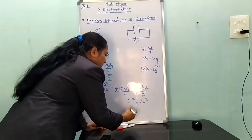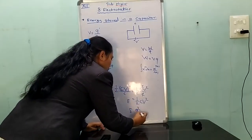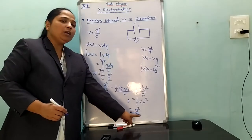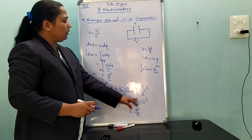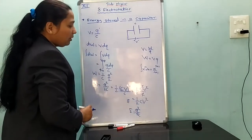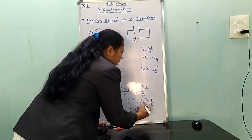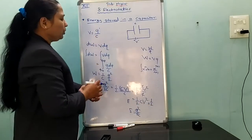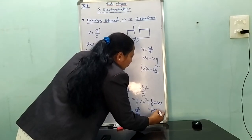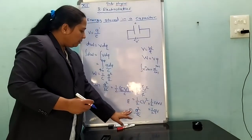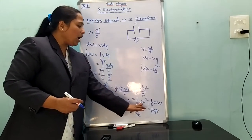In terms of Q, the energy stored is E is equal to Q squared upon 2C. Or E is equal to half C V squared. Or when both charge and potential are given, E is equal to half Q V. These are the three equivalent expressions for energy stored in a capacitor.